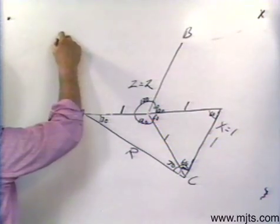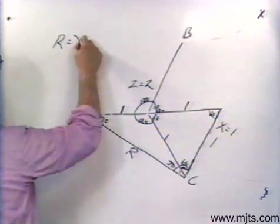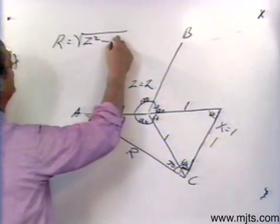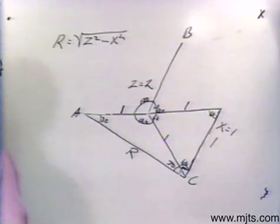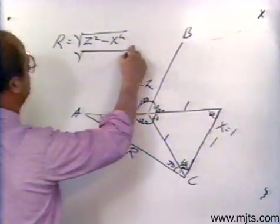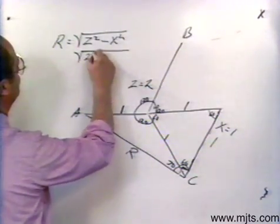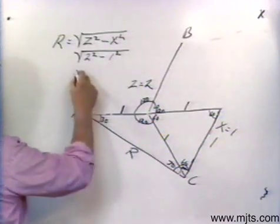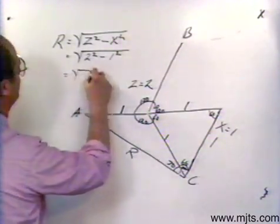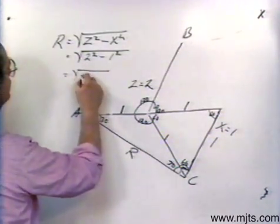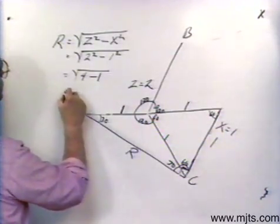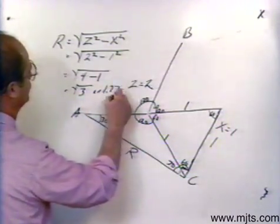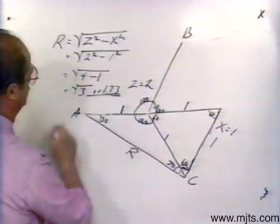Now, in our right triangles, what we did, we know that R then is equal to the square root of Z squared minus X squared. Okay. Now, Z represents 2 squared minus 1 squared for X over here. Okay. Now, then we're gonna square 2. We have 4 minus 1, which is equal to the square root of 3. Or 1.73. So, there's our three phase relationship.